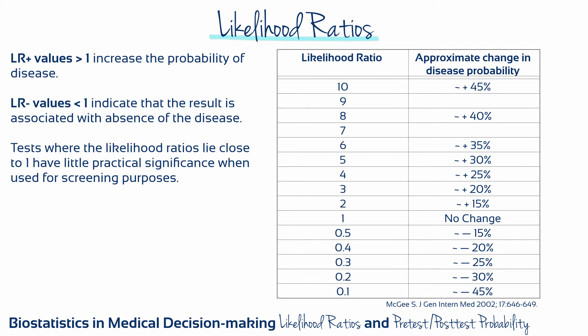The clinical implications of a positive or negative test result vary according to the size of the likelihood ratio, as shown by the rules of thumb in this table. A positive likelihood ratio with a high value is useful to rule in a disease, while a negative likelihood ratio with a low value is useful to rule out a disease.